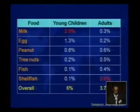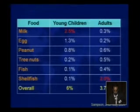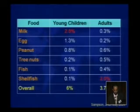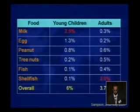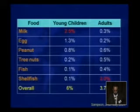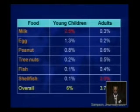This table shows the prevalence in pediatric as well as adult populations. As we can see, milk is number one in pediatrics. In adults, shellfish is first, followed by peanut and tree nut.